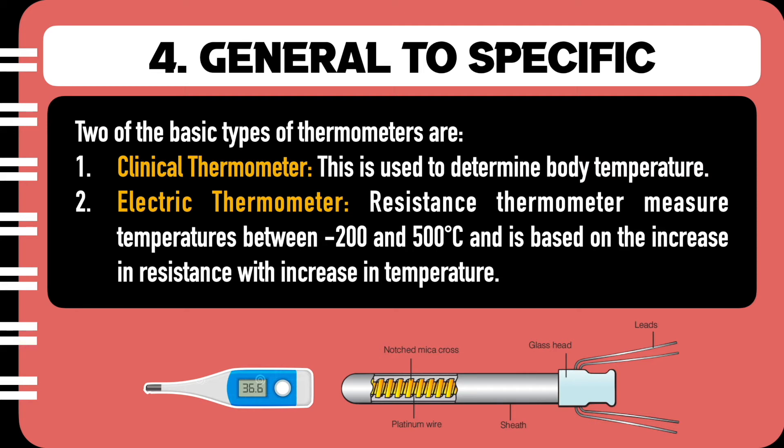The fourth way is by taking your definition from a generic one to a more specific one. You can start with the generic definition of a thermometer and then segregate it into different types. Two basic types of thermometers are the clinical thermometer, used to determine body temperature, and the electrical thermometer, a resistance thermometer which measures temperatures between minus 200 and 500 degrees centigrade and is based on the increase in resistance with increase in temperature.